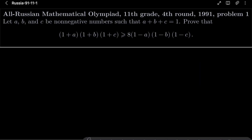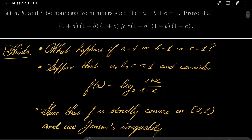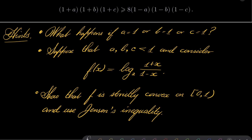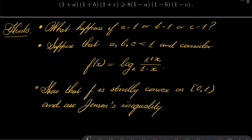Here are my hints for this problem. First, consider what happens if a equals 1, or if b equals 1, or if c equals 1. For the second case, suppose that a, b and c are strictly less than 1, and consider the function f(x) = log₂((1+x)/(1-x)). Use the second derivative to show that this function is strictly convex on the interval (0,1), and use Jensen's inequality to show that our inequality is true.